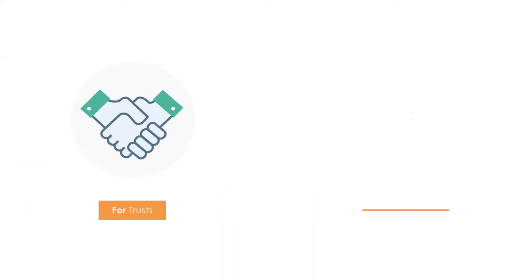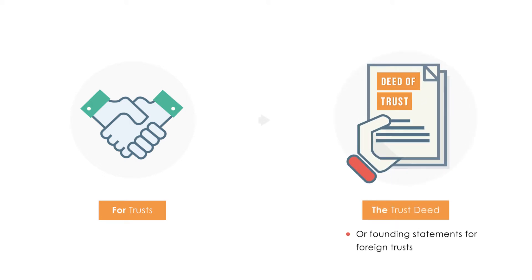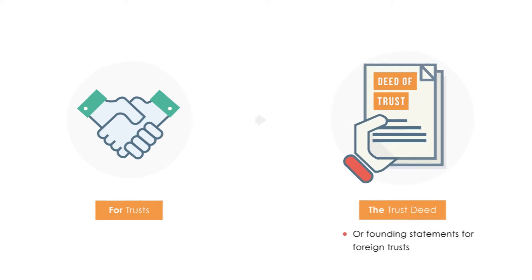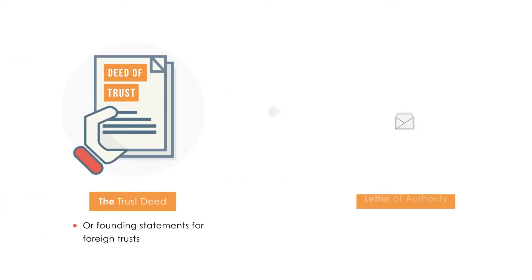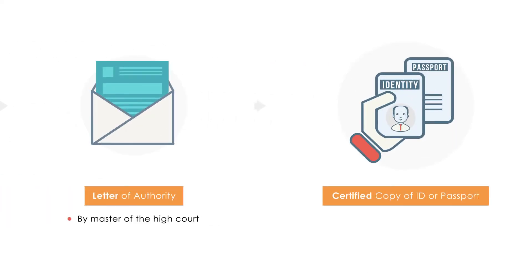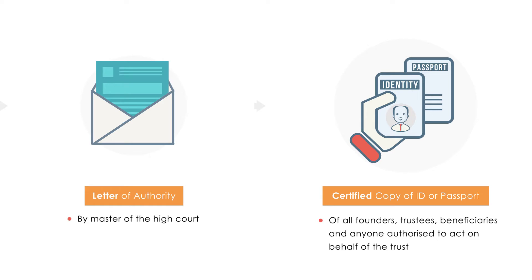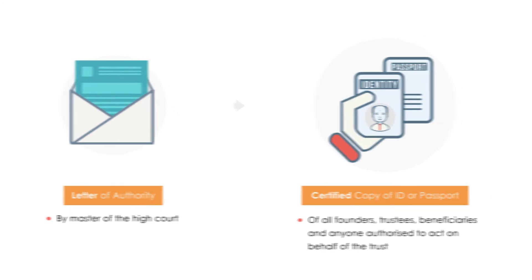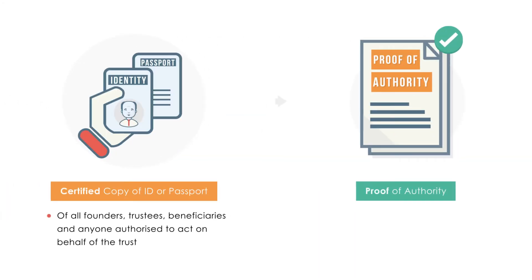For trusts, you will need the trust deed or founding statement for foreign trusts, a letter of authority by the Master of the High Court, certified copies of ID books or passports of all founders, trustees, beneficiaries, and anyone authorized to act on behalf of the trust, as well as proof of authority to act on behalf of the trust.